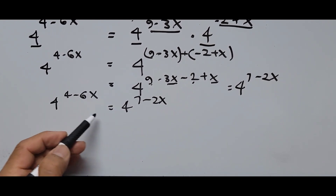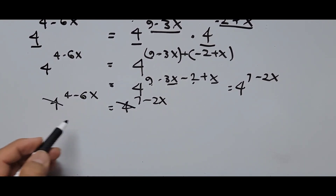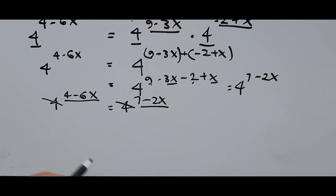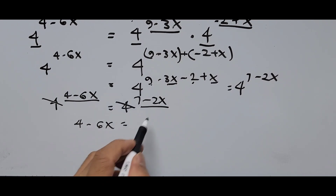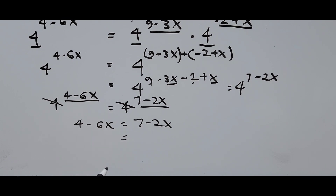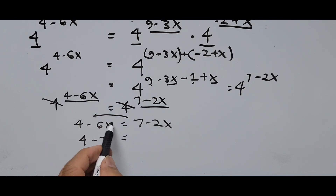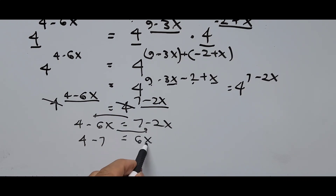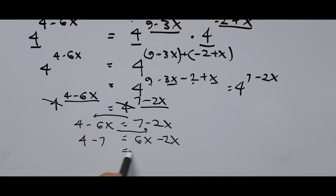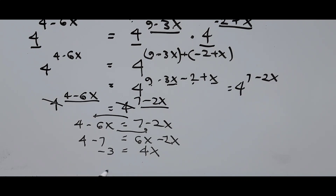Since the bases are equal, we set the exponents equal: 4 minus 6x equals 7 minus 2x. Transposing, we get 6x minus 2x equals 7 minus 4, so 4x equals 3, which gives x equals negative 3 fourths.